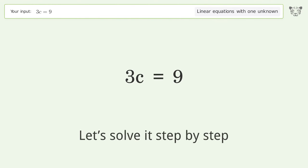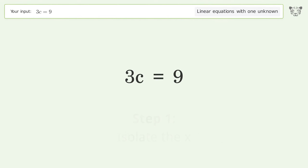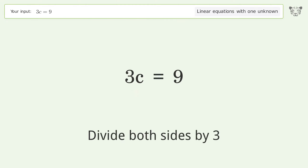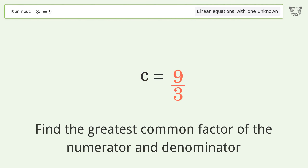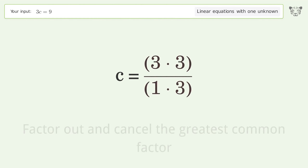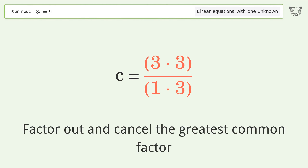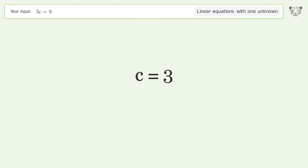Let's solve it step by step. Isolate the x, divide both sides by three, simplify the fraction, find the greatest common factor of the numerator and denominator, factor out and cancel the greatest common factor. And so the final result is c equals three.